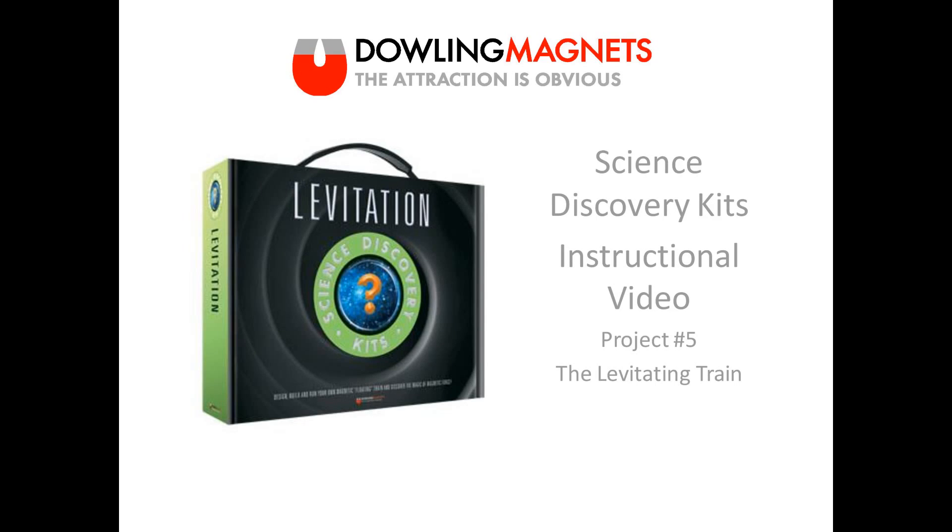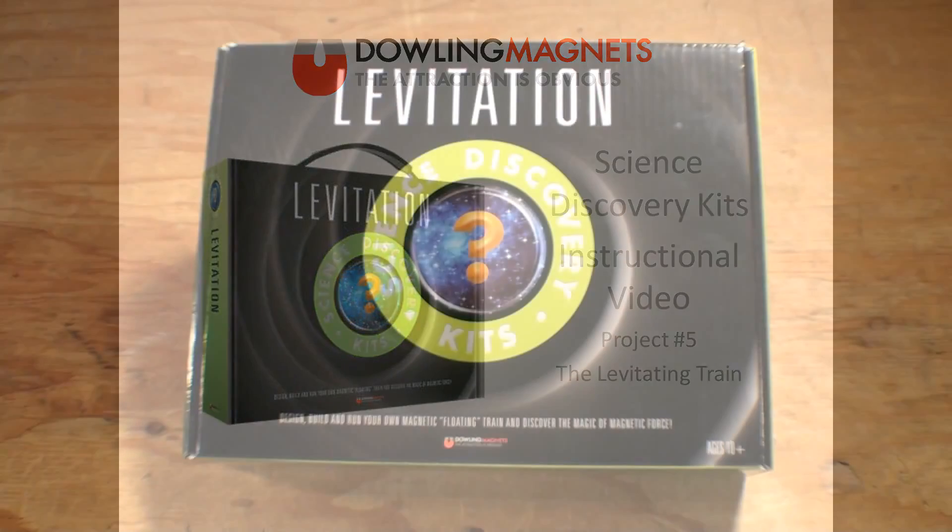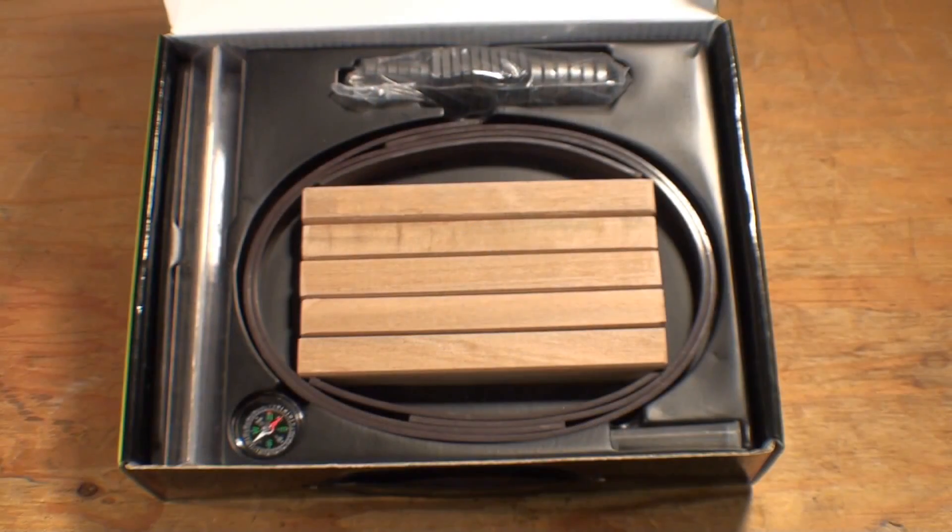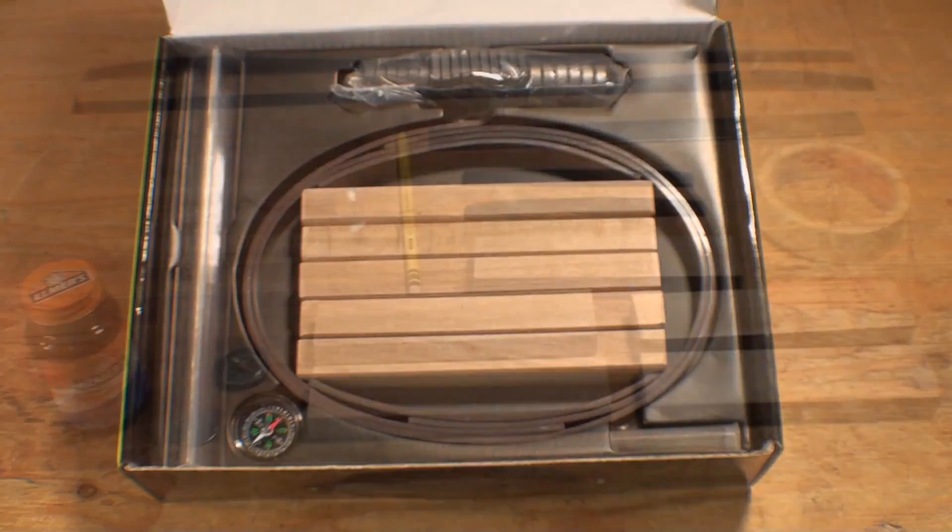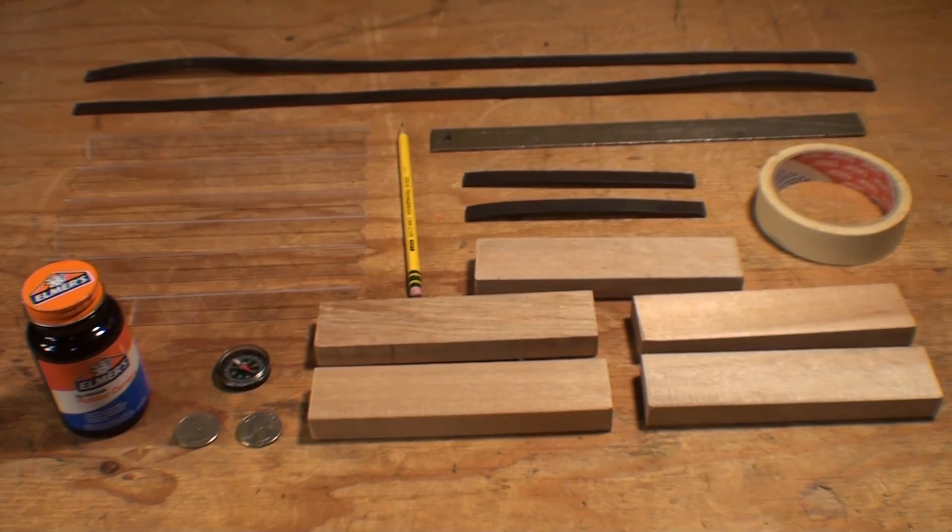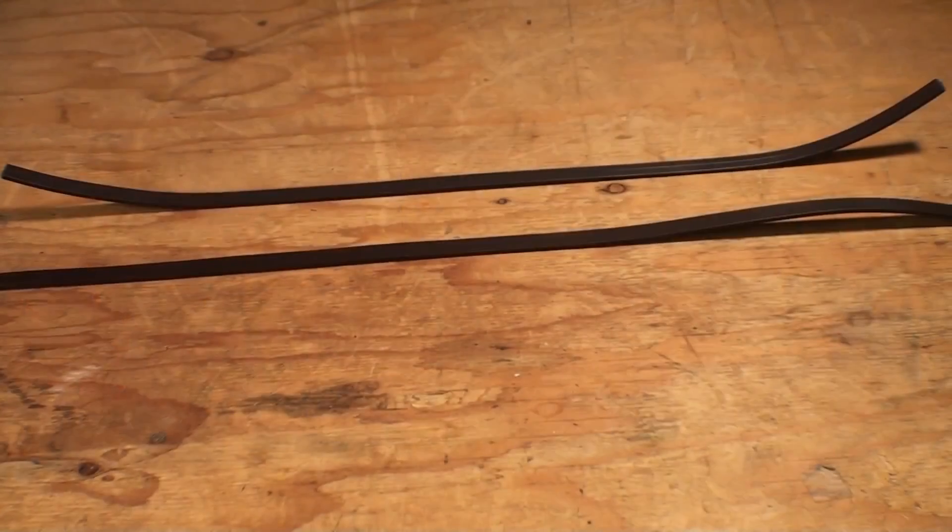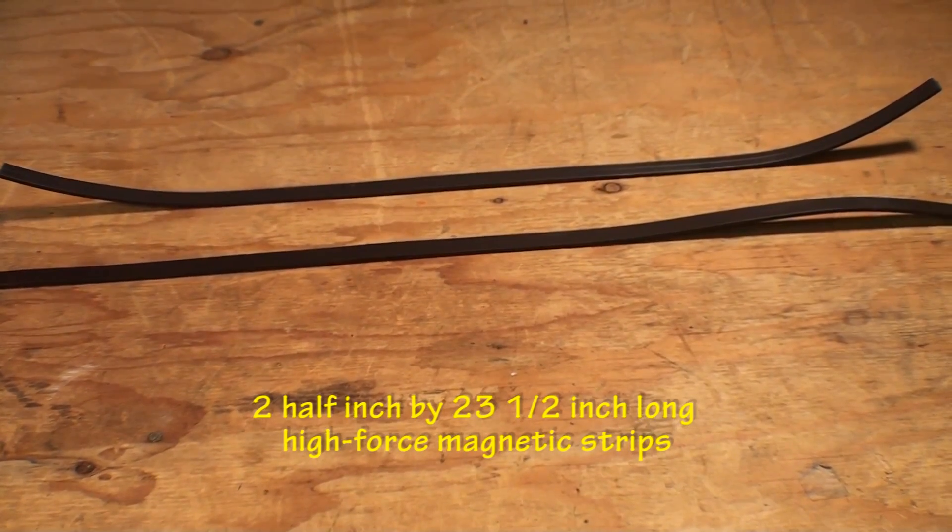Today we'll be assembling the levitating train, project number five of Dowling Magnets Science Discovery Levitation Kit. Most of the materials are included in the kit, but you will need a few household items. Included in the kit are two